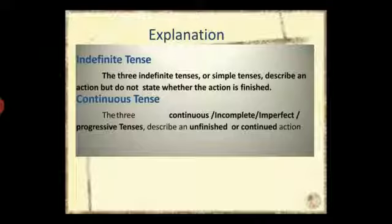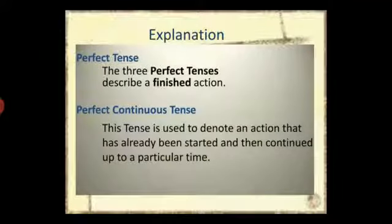The three indefinite or simple tenses describe an action but do not state whether the action is finished. Continuous tense denotes an unfinished or continued action across present, past, or future. The three perfect tenses — present, past, or future perfect — denote a completed or finished action. Perfect continuous tense is used to denote an action that has already been started and then continued up to a particular time.